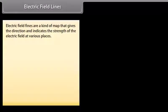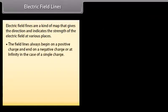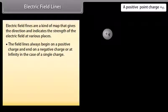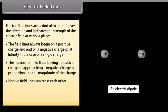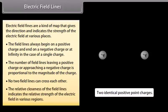Electric field lines: Electric field lines are a map that gives the direction and indicates the strength of the electric field at various places. Field lines always begin on a positive charge and end on a negative charge or at infinity. The number of field lines is proportional to the magnitude of the charge, no two field lines can cross each other, and their relative closeness indicates the relative strength of the field.